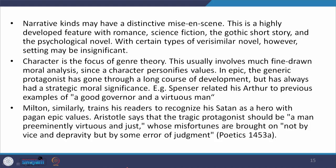Occasion in its imaginary attenuated form coalesces with the stylistic features, as is observable in the short poetic kinds. Lyrical forms often seem to imply actual interpersonal relations. For example, John Donne's A Valediction: Forbidding Mourning adopts a similarly intimate stance. Narrative kinds may have a distinctive misogyny — a highly developed feature in romance, science fiction, the gothic short story and the psychological novel.